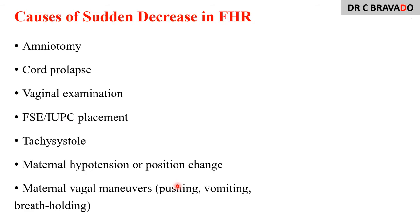Causes of sudden drop in fetal heart include physiological causes: rupture of membranes or amniotomy, vaginal examination, fixing intrauterine pressure catheter or scalp electrode, maternal hypotension, position changes, and vagal maneuvers. Pathological causes include uterine rupture, cord prolapse, and severe placental abruption. Always check maternal position and vital signs first to exclude hypotension, then perform vaginal examination.